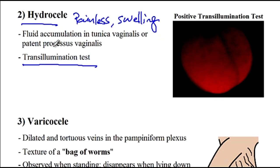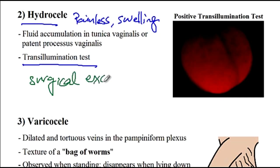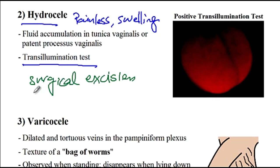In terms of treatment, the most common treatment used is surgical excision of the hydrocele sac. Aspiration cannot be used to treat this condition because the fluid will rapidly re-accumulate. So surgical excision of the hydrocele is required.